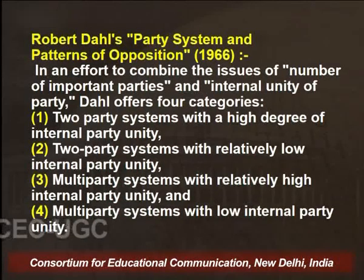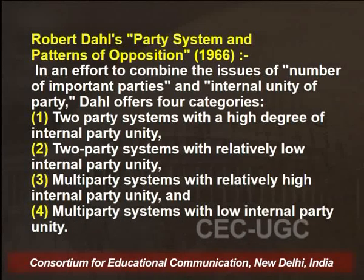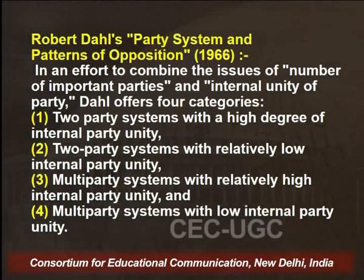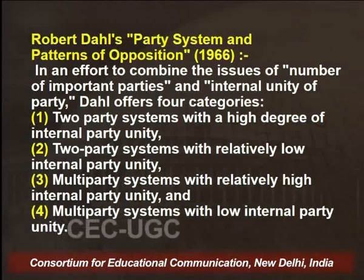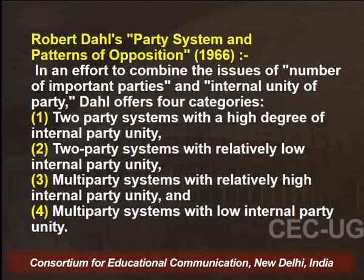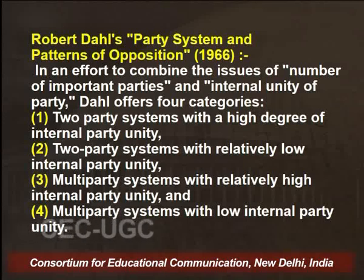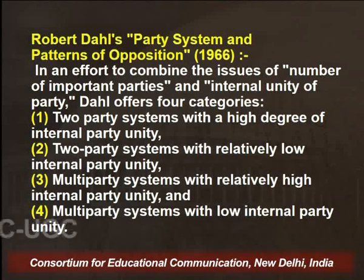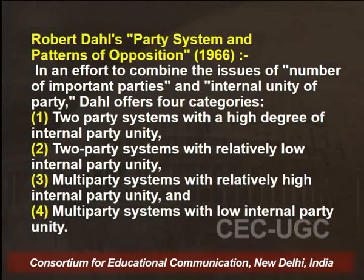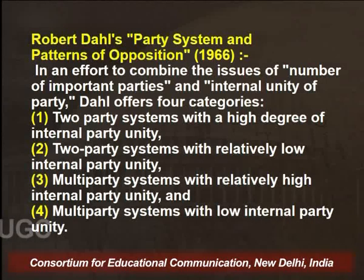Another important typology comes from Robert Dahl's Party System and Patterns of Opposition. In this work, there is an effort to combine the issues of number of important parties and internal unity of party. Robert Dahl offers four categories: two-party systems with a high degree of internal party unity; two-party systems with relatively low internal party unity; multi-party systems with relatively high internal party unity; and multi-party systems with low internal party unity.